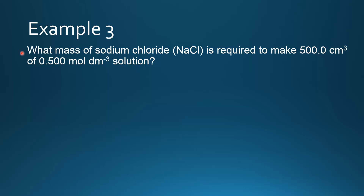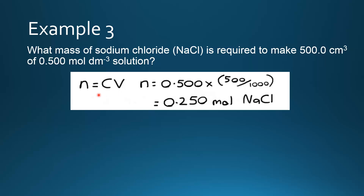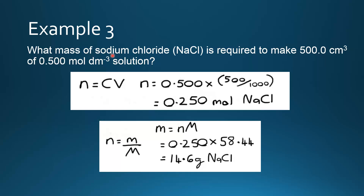Here's our last example, which is slightly different to the previous two. What mass of sodium chloride is required to make 500.0 centimeters cubed of a 0.500 moles per decimeter cubed solution? First we find the number of moles of sodium chloride using N equals CV, rearranged from C equals N over V. The concentration is 0.500 and the volume is 500 divided by 1000, giving 0.250 moles of sodium chloride.